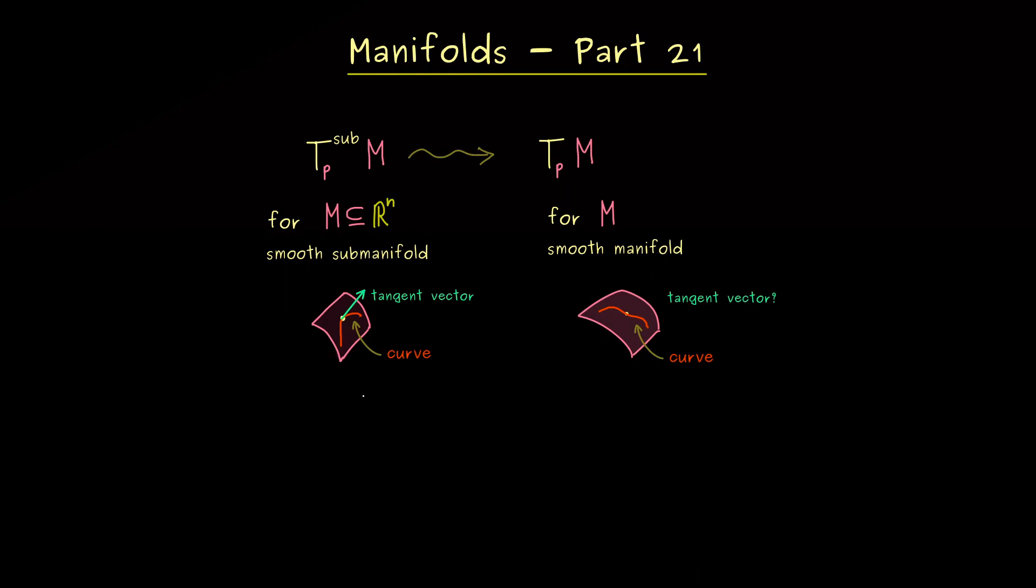However, you might already guess, that there is a reason why we had this long discussion about curves in the last video. There, as you should recall, we used the chart h to push everything to the R^k. So this is the common lower level in our manifold picture, where k is the dimension of the manifold.